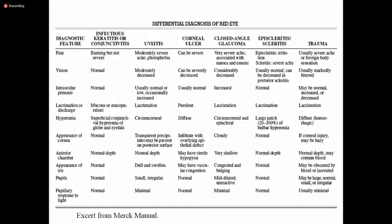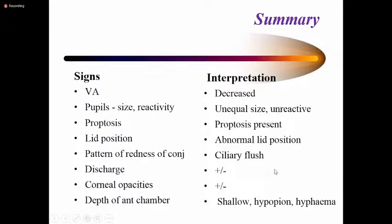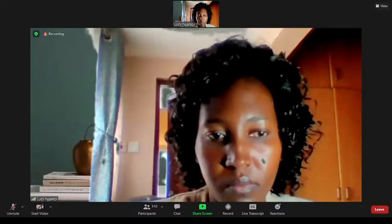To summarize: a painful red eye can result from adnexal conditions or diseases of the eye itself. Depending on the cause you may find infectious causes, uveitis, corneal ulcer, angle closure glaucoma, or endophthalmitis.